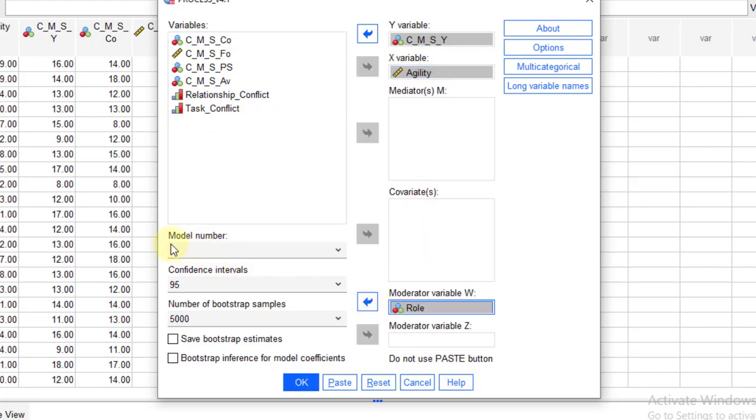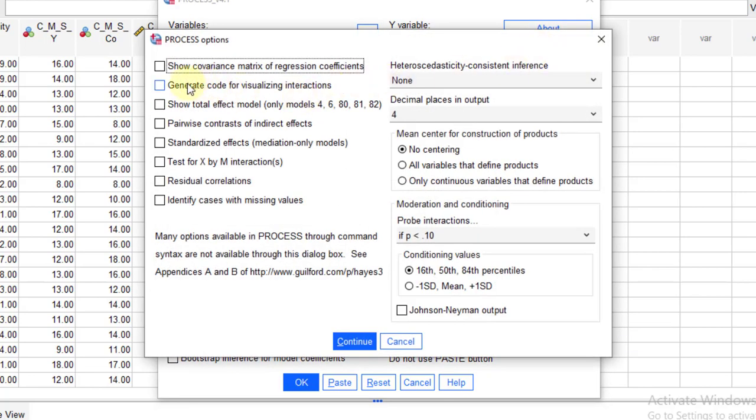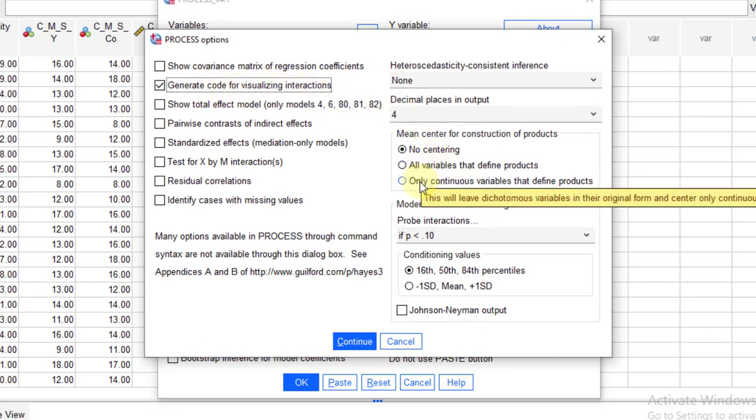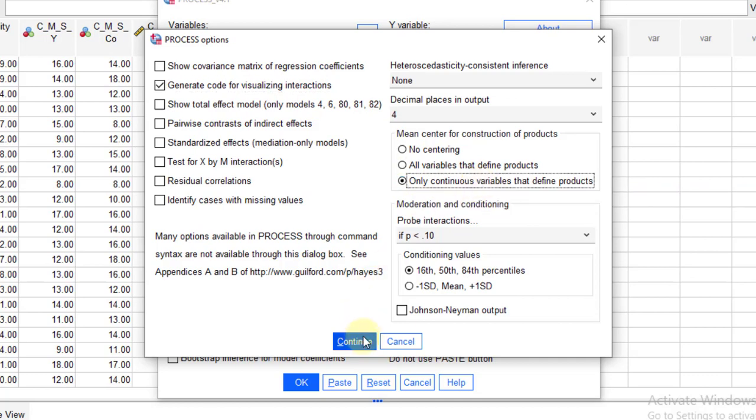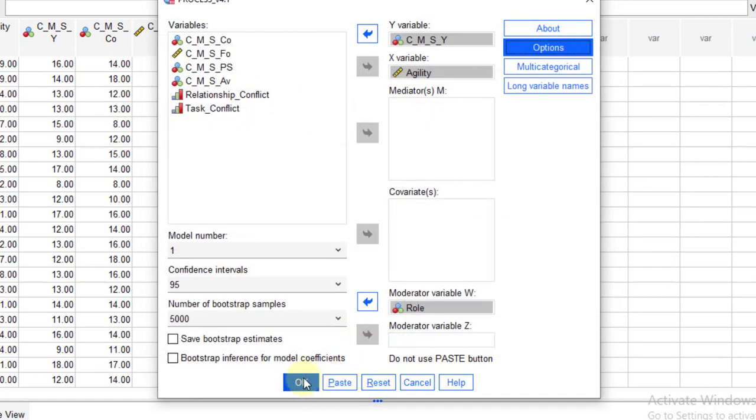We are using model 1, Hayes. So I have selected this. Confidence interval is kept at 95%. Bootstrap samples, 5,000. Click on options. Here select generate code for visualizing interactions and only continuous variable that define products. Continue and then continue.